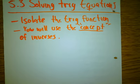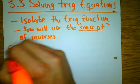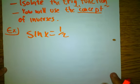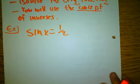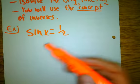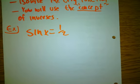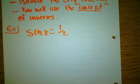Here's example number one: sine of x equals 1/2. You have an equation with an equal sign, so you're solving for x. However, you can't really get x by itself, so you need to get the function of sine by itself, which it already is — sine x equals 1/2. So, this is kind of like an inverse problem. You need to ask yourself: where on the unit circle is sine equal to 1/2?